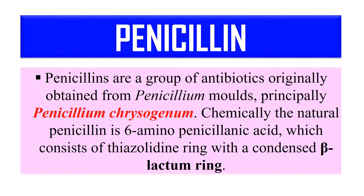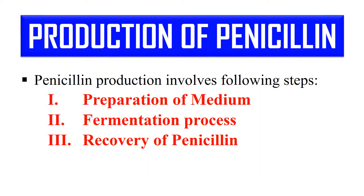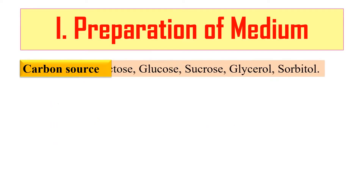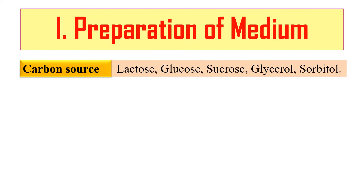The production involves the preparation of medium, the fermentation process, and the recovery. For the preparation of medium, we have to provide a Carbon source, which is generally in the form of Lactose in the case of Penicillin. But we can also use Glucose, Sucrose, Glycerol, or Sorbitol as a Carbon source.